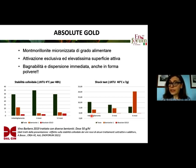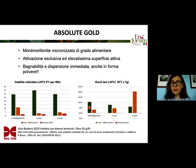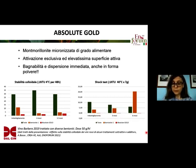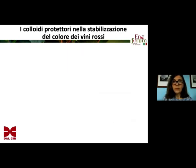On the right-hand side, you see the results of the shock test, which means the simulation of transport of wine at 40 degrees for a number of days. In this case, you will have an increase in turbidity, and that is present also after three months and six months. You notice that the wine treated with Absolute Gold did not entail an increase in turbidity, while the wine treated with the general bentonite did not achieve the same performance and result.